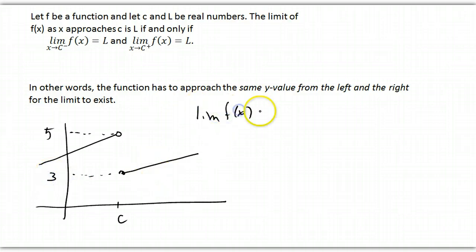so the limit of f of x as x approaches c from the left is 5, and the limit of f of x as x approaches c from the right is 3. Because they have different y values, the limit as x approaches c of f of x does not exist.